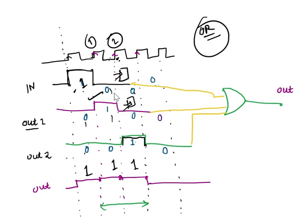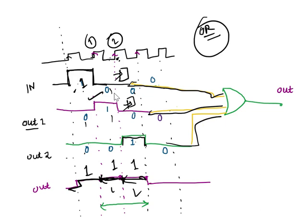So we have this input, and the same input extended — right? This input has been extended for two clock periods. So if we pass this waveform through an OR gate, what we will get at the output is this extended waveform.